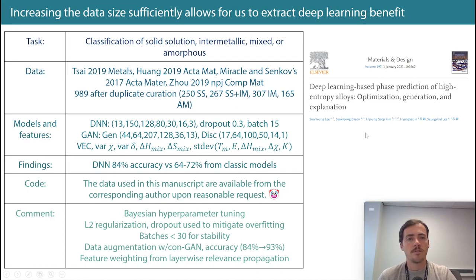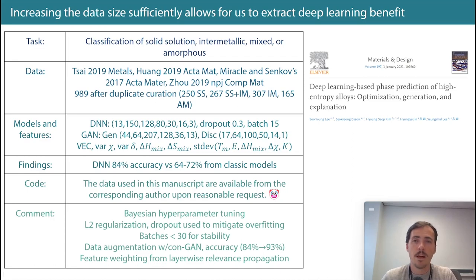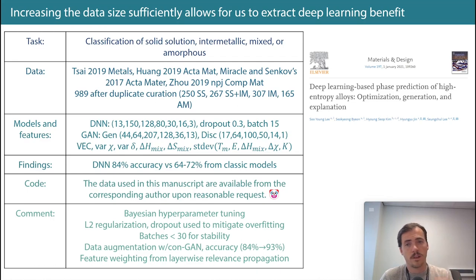How about this paper? This is from Lee, a 2021 paper in Materials and Design. Their task was what we've seen before: classifying solid solution, intermetallic, mixed, or amorphous — this time a four-category classification.